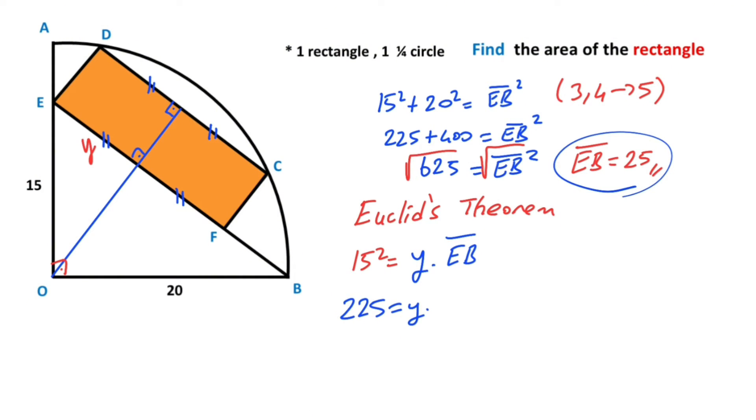We have calculated EB as 25. It means y is going to be 9 units.